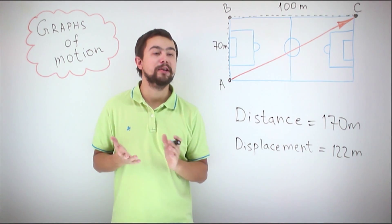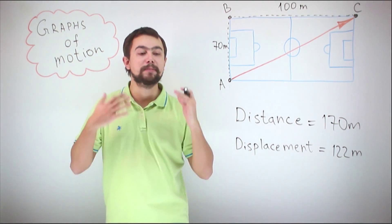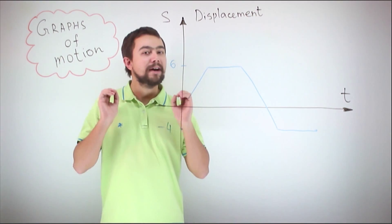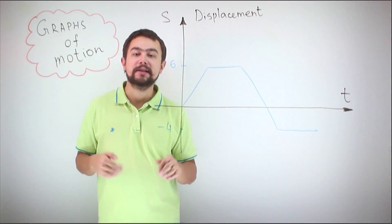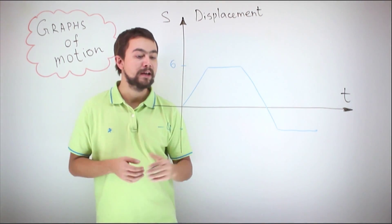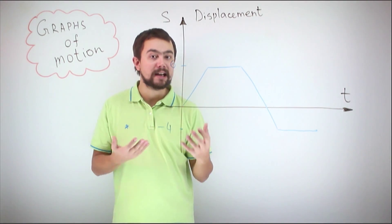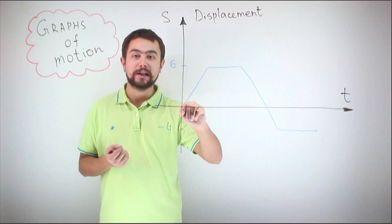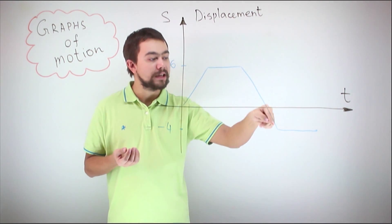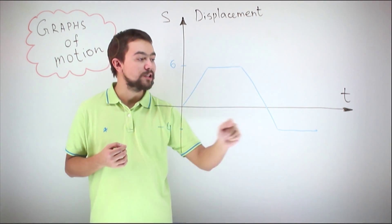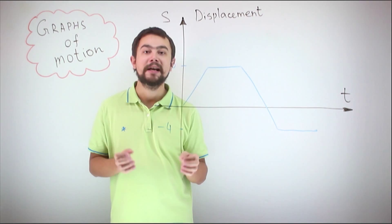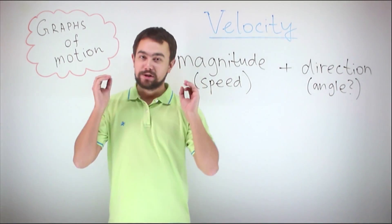We see that distance is always bigger than the magnitude of the displacement. When we speak about displacement along a straight line, we have two directions — forwards and backwards — meaning displacement can be positive or negative. For example, this body started at point 0, moved 6 meters forwards, stopped for a while, then moved backwards until it reached point negative 4, where it stopped. The total displacement is minus 4, meaning the body moved 4 meters in the negative direction.